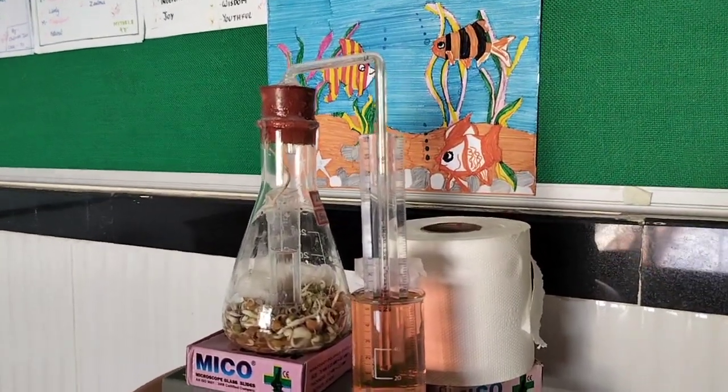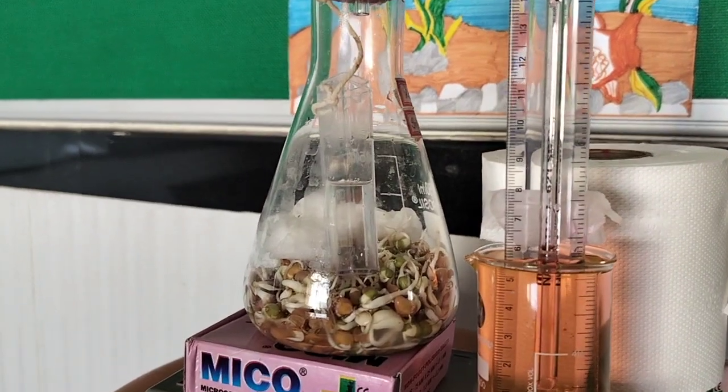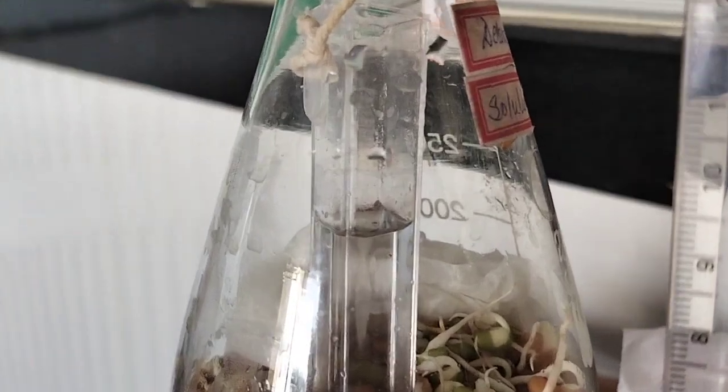We made the setup with the conical flask containing sprouted seeds in which potassium hydroxide solution is suspended in a test tube, freshly prepared.